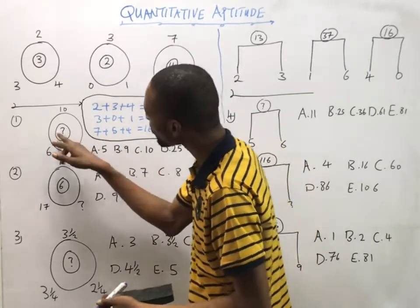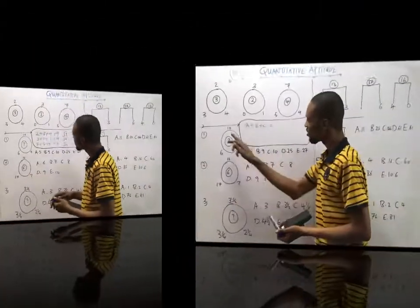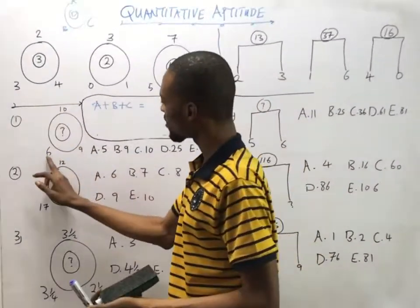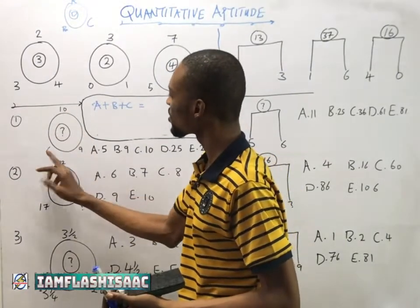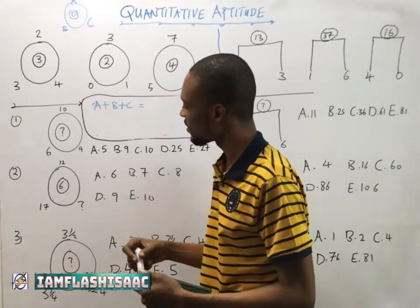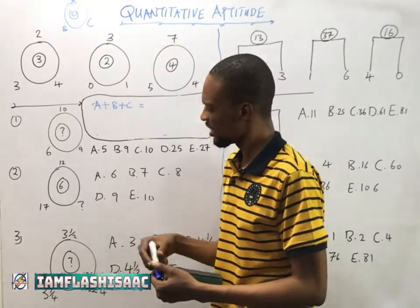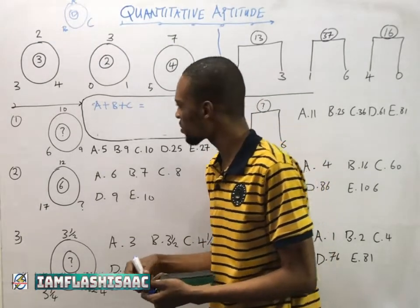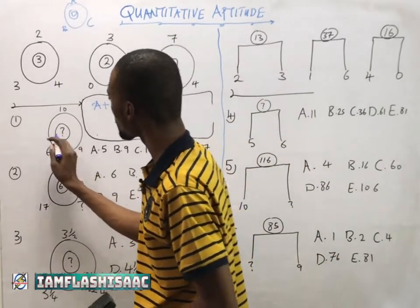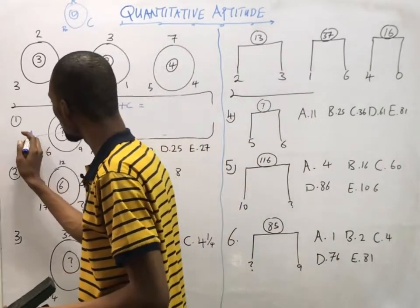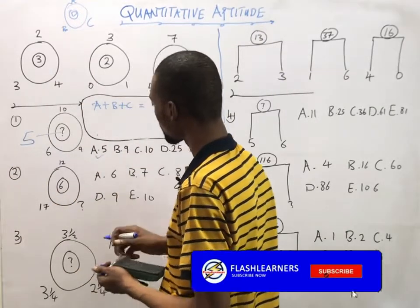Applying the formula: we need what is inside the question. 10 plus 6 is 16, plus 9 is 25. The square root of 25 is 5. So the answer here is 5. That's option A.